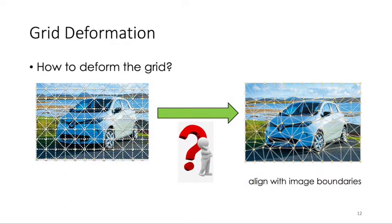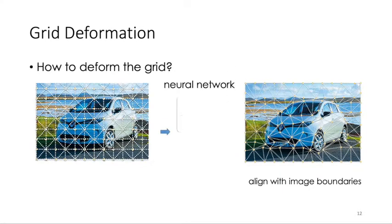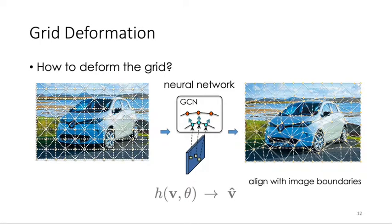We now discuss our deformable grid module and how we train it. In our approach, we utilize a neural network with GCN to predict the deformation for each vertex. Let edge denote the network, which is parameterized by theta.